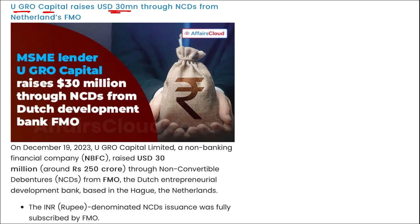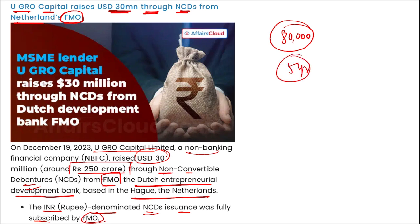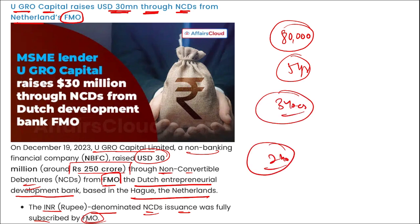Ugro Capital has raised $30 million through NCDs from Netherlands-based FMO. Ugro Capital Limited, an NBFC, raised $30 million — approximately ₹250 crore — through non-convertible debentures from FMO, the Dutch Entrepreneurial Development Bank, based in The Hague, Netherlands. The rupee-denominated NCD issuance was fully subscribed by FMO. Ugro Capital has offered credit to more than 80,000 small businesses over the last five years, and in 2023, raised over ₹340 crore in equity capital, including ₹240 crore from the Danish Development Finance Institution.